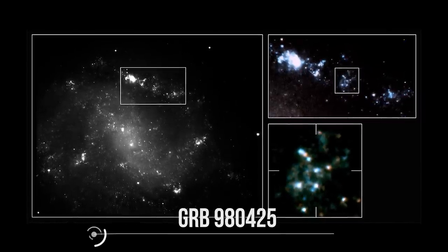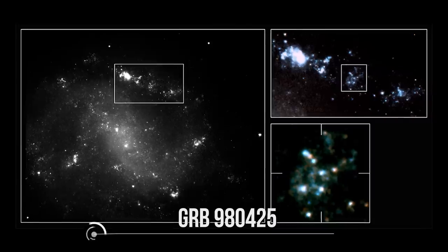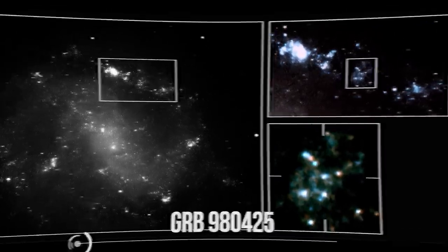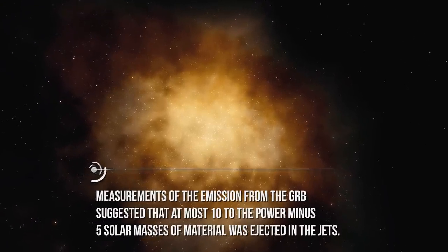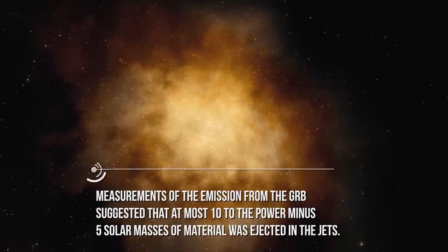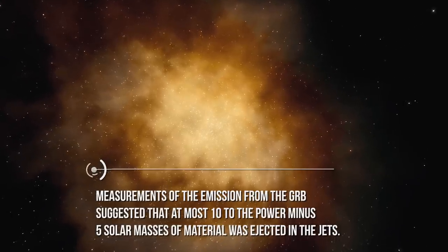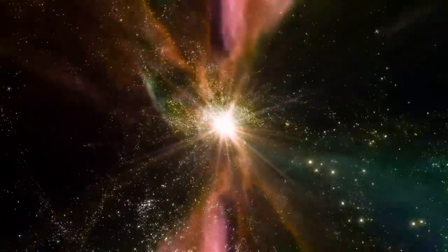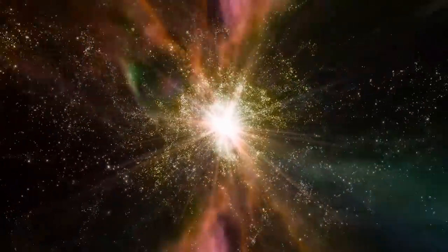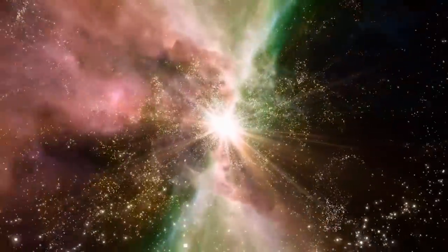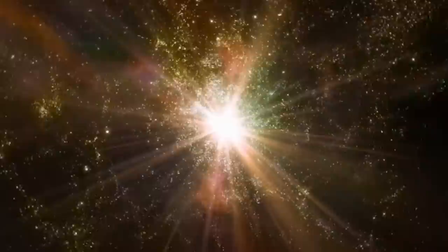GRB 980425 irradiated Beppo-Sachs, triggering the hunt for an afterglow. Measurements of the emission from the GRB suggested that at most 10-5 solar masses of material was ejected in the jets. Additionally, the peak gamma-ray emission was four orders of magnitude less than many of the previously observed cosmological bursts. Overall, this was a fairly wimpy gamma-ray burst.